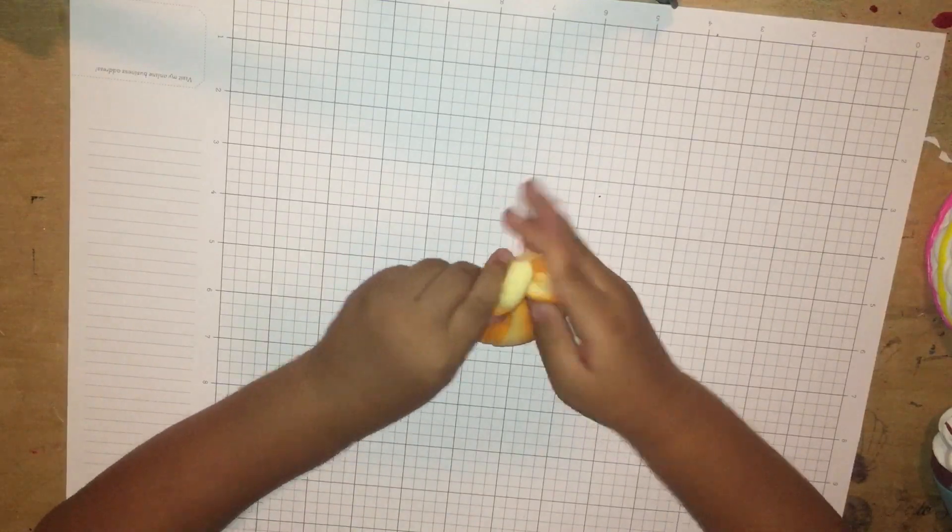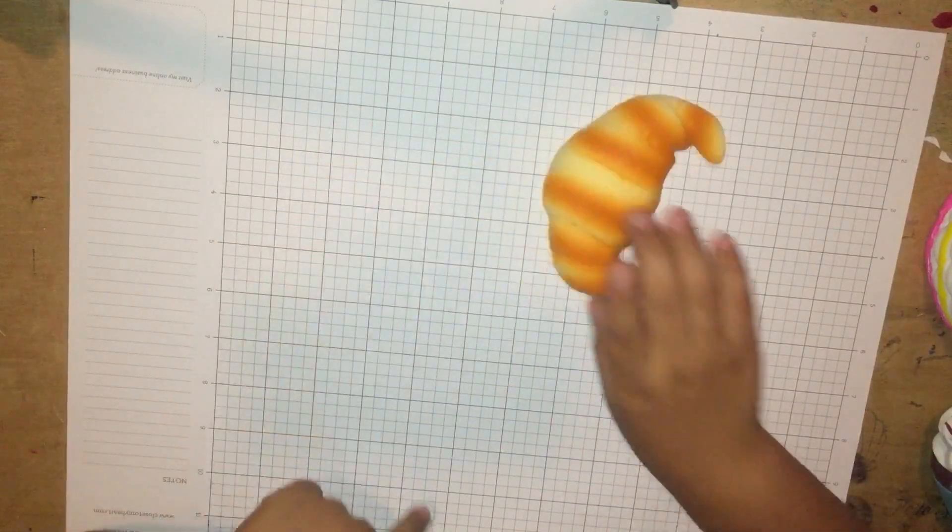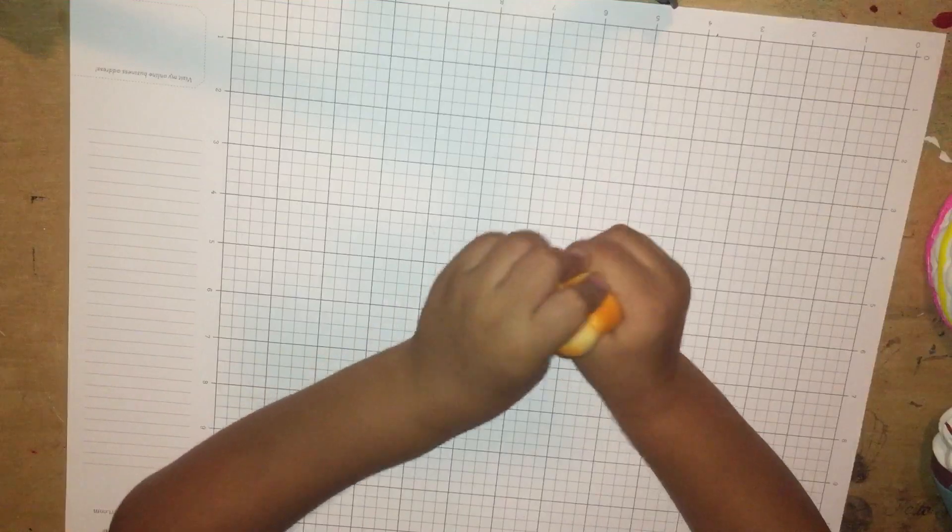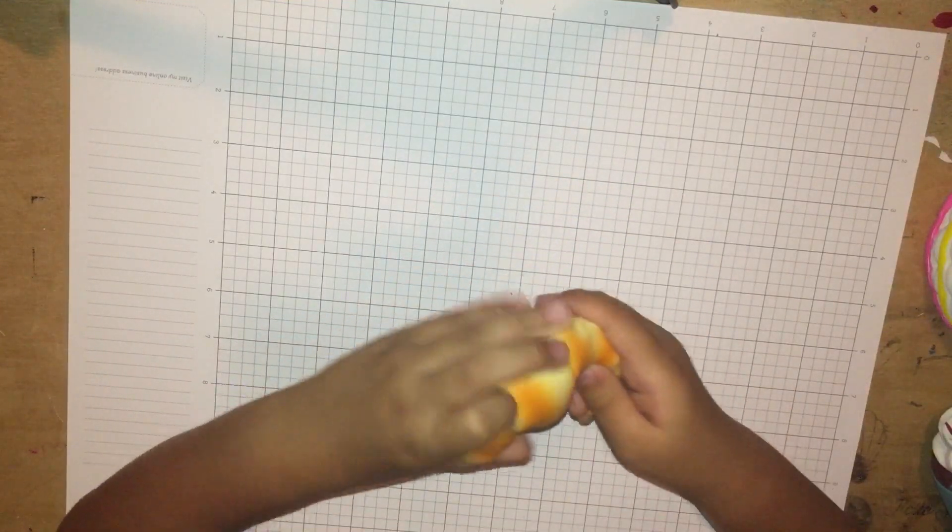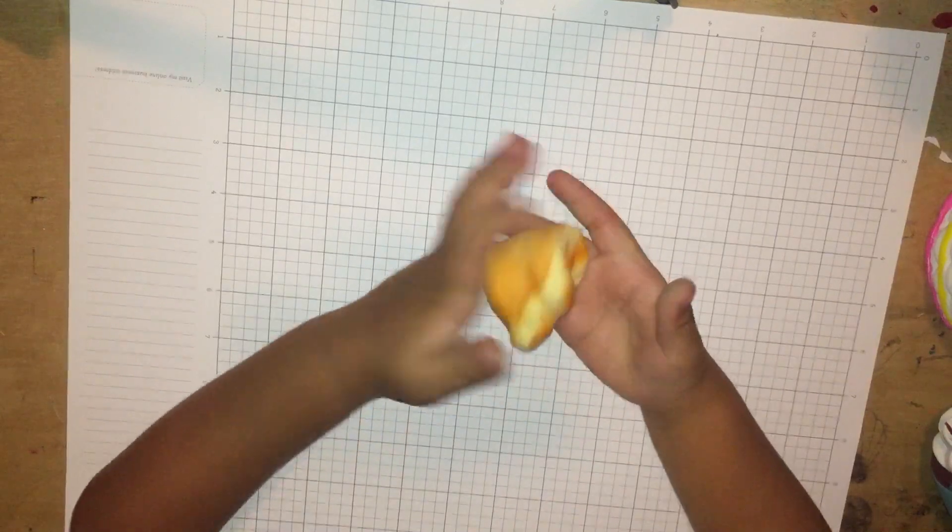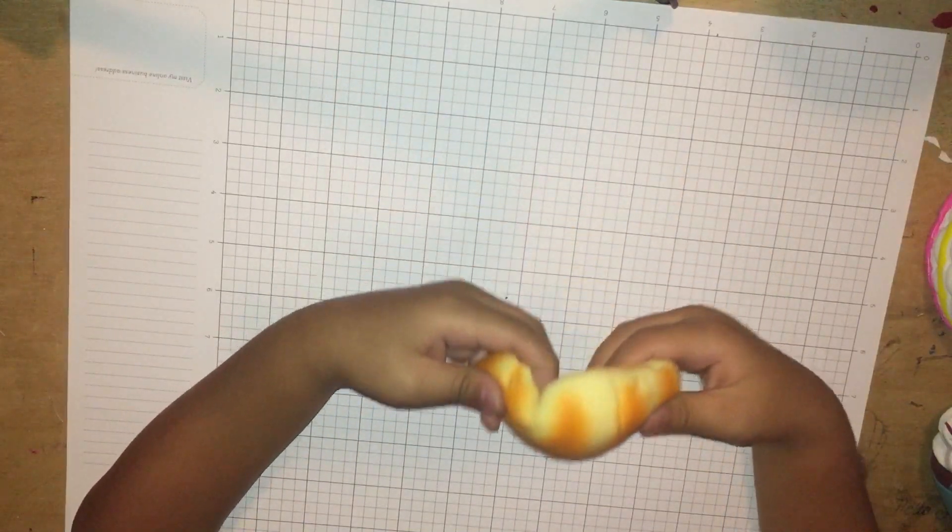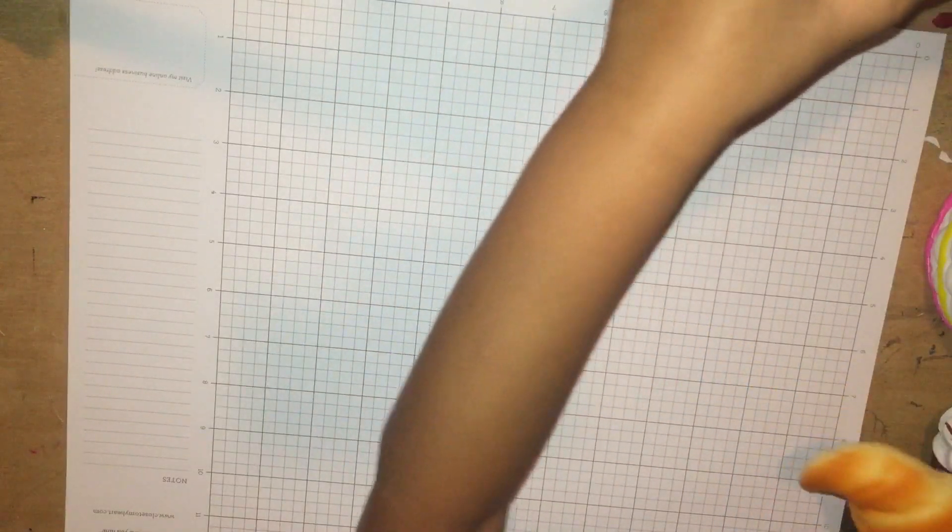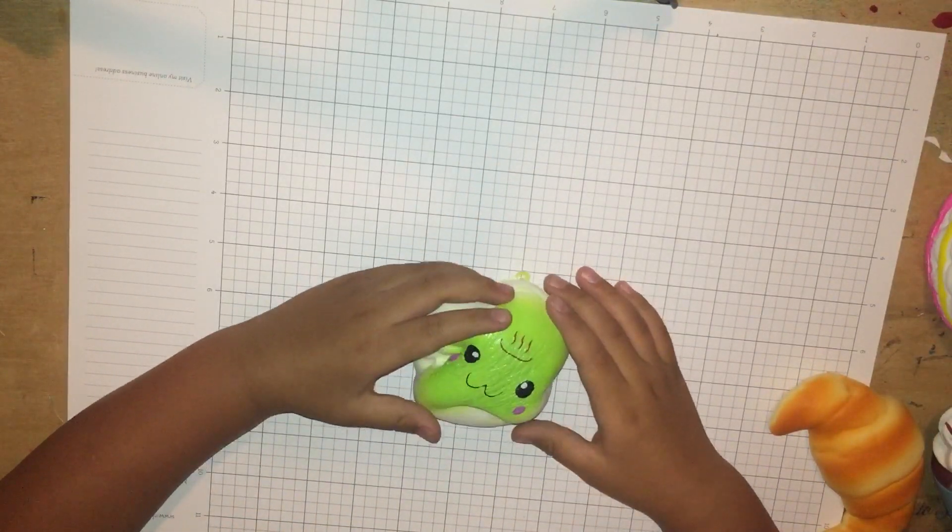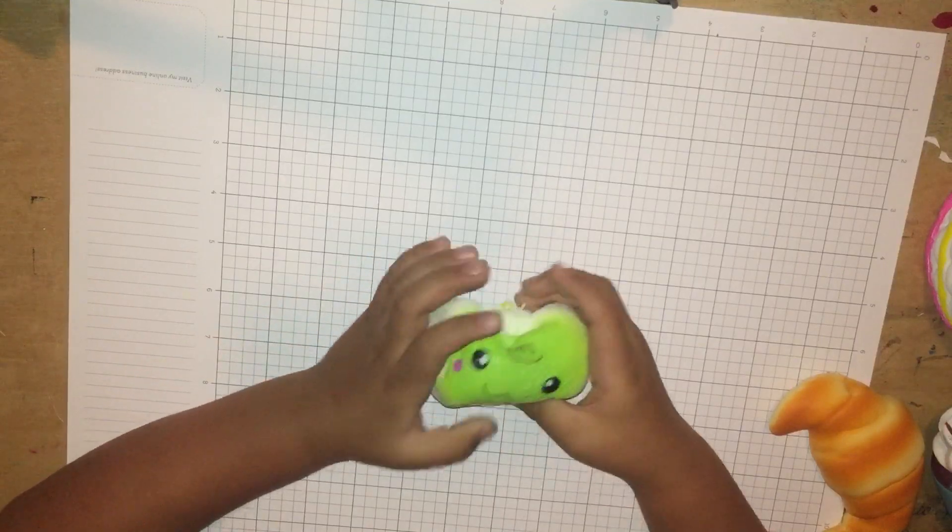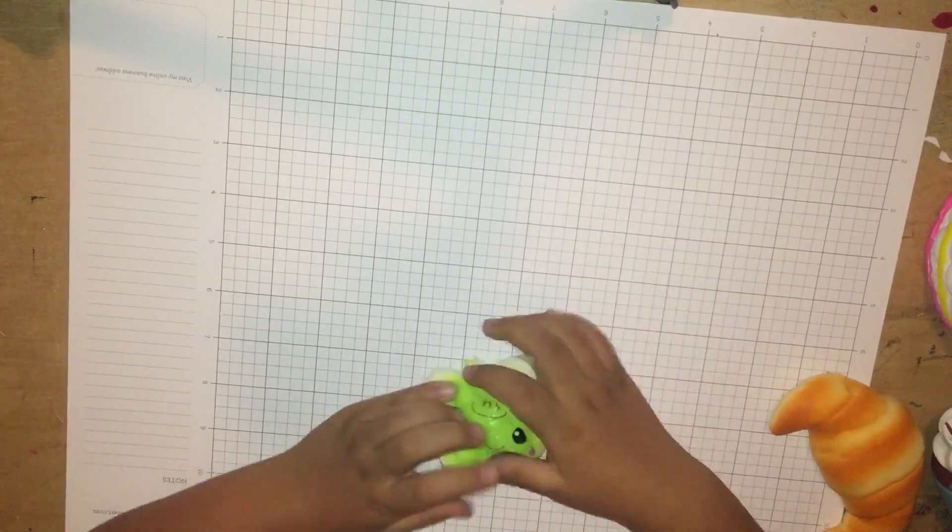Now we have the croissant which is pretty squishy but not too squishy. It smells good but it's not too squishy. That's a steam bun. Now we have the steam bun with the face on it, it's pretty squishy.